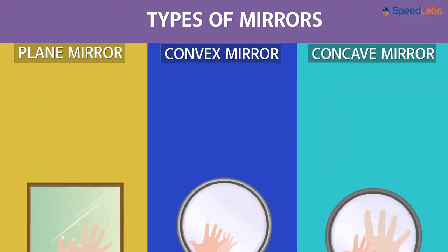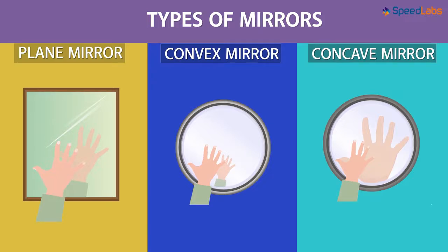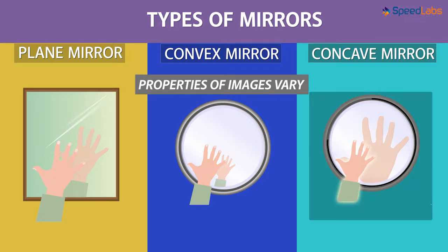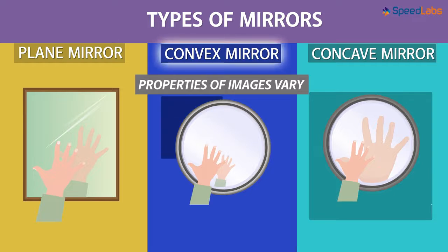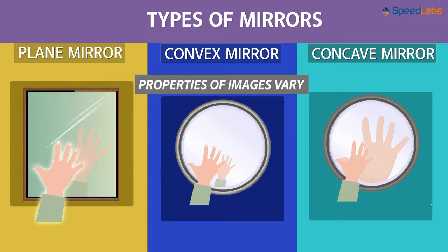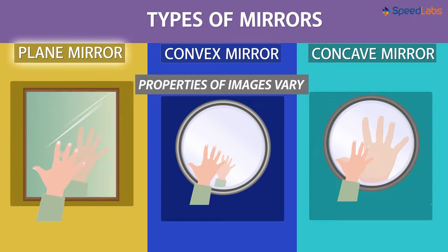Each mirror forms images of objects, and these images vary in properties. For instance, the image formed by a concave mirror is larger than the size of the object, while the image formed by a convex mirror is smaller than the object. The size of the image and the object are the same in the case of a plane mirror. But we are not going to get any deeper into that right now.